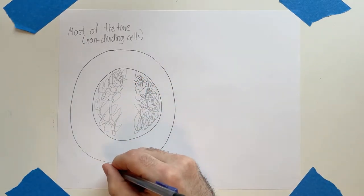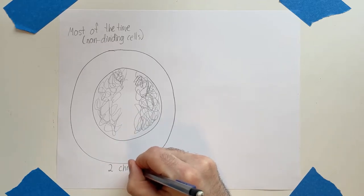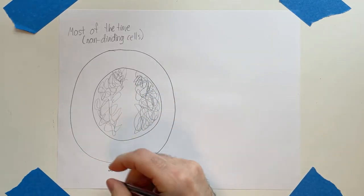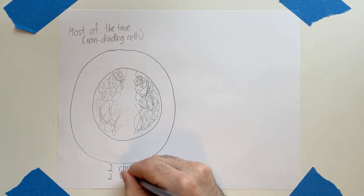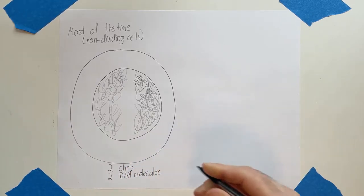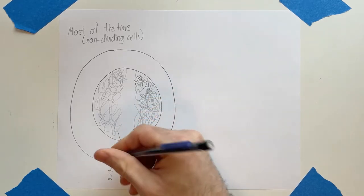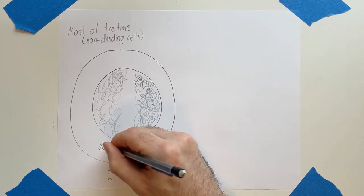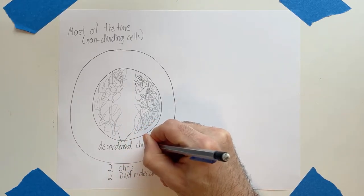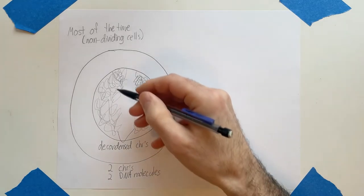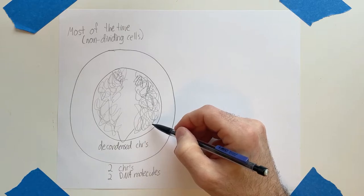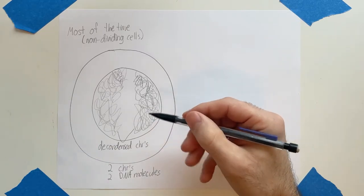Now, here I've drawn two chromosomes. Here's one, here's the other, and these two separate chromosomes are two DNA molecules. Now, these chromosomes are decondensed chromosomes. Decondensed chromosomes are just chromosomes where their DNA is very much just spread out around the nucleus of the cell. And there's very good reason for this.